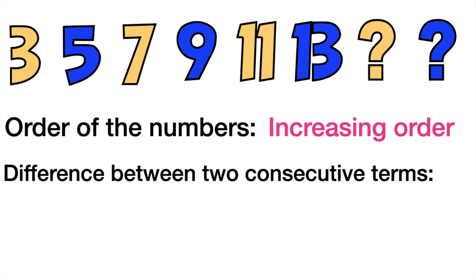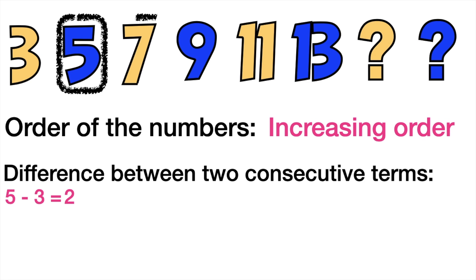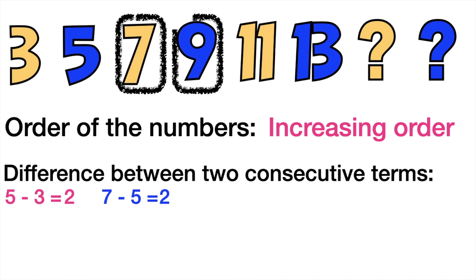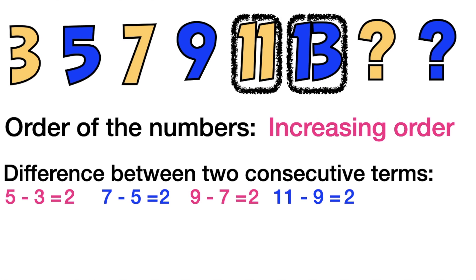Next, let's find the difference between two consecutive numbers. When you say two consecutive terms, it is the numbers that are next to each other. So let's find the difference of three and five. Always remember, when subtracting, use the bigger number first followed by the smaller number. Five minus three equals two. Seven minus five equals two. Nine minus seven equals two. Eleven minus nine equals two. And thirteen minus eleven equals two.